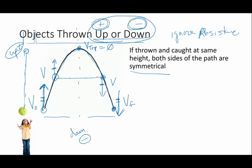So with the same value, this is going to be positive, this will be negative, this will be positive, that will be negative. And at the tippy top, the velocity is zero.